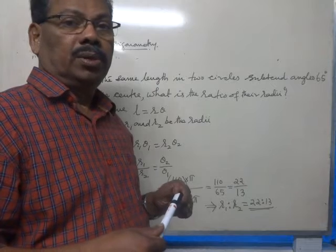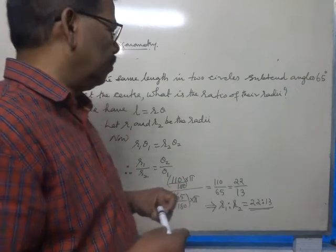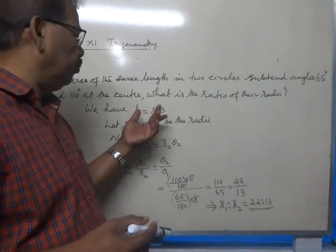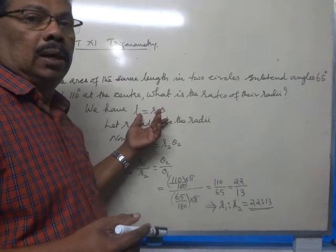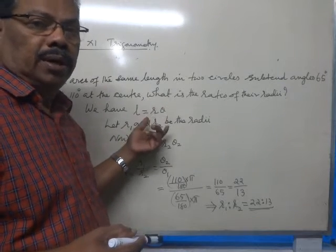What is the ratio of their radii? See, we have the formula: length of the arc L equals R theta, when theta is in radian measure.